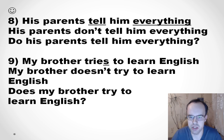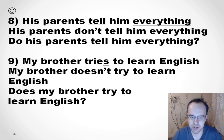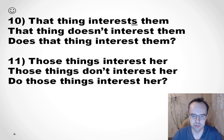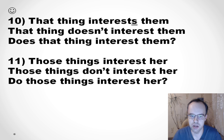'His parents tell him everything. His parents don't tell him everything. Do his parents tell him everything?' 'My brother tries to learn English. My brother doesn't try to learn English. Does my brother try to learn English?' 'That thing interests them' — that thing means it, so we add S. 'That thing interests them. That thing doesn't interest them. Does that thing interest them?'